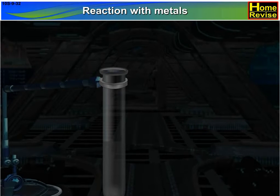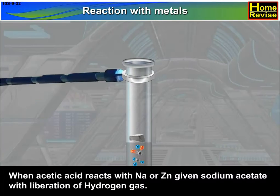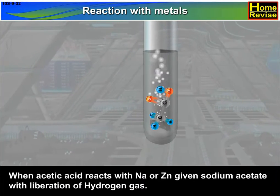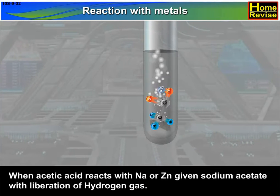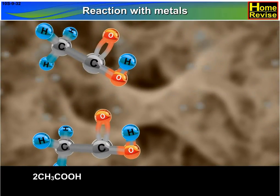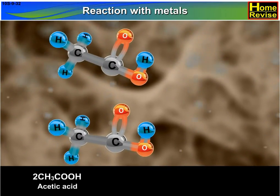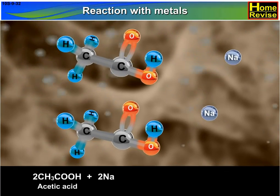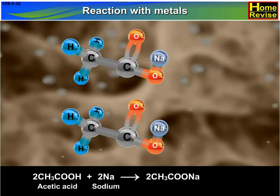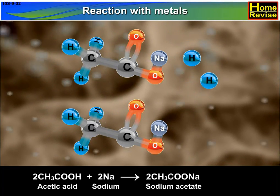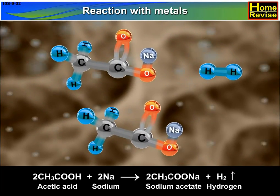Reaction with Metals: When acetic acid reacts with sodium or zinc, it gives sodium acetate with liberation of hydrogen gas. 2CH₃COOH (acetic acid) + 2Na (sodium) → 2CH₃COONa (sodium acetate) + H₂ (hydrogen gas).